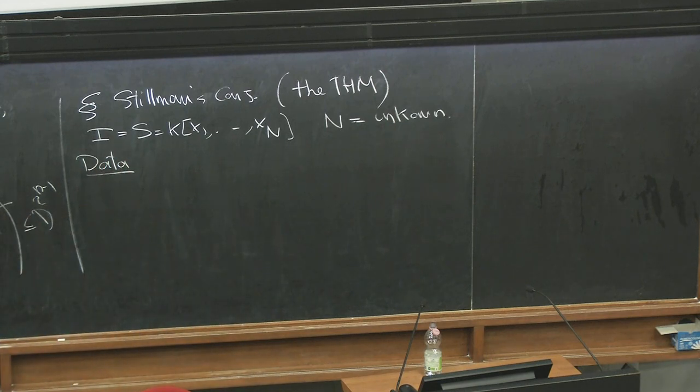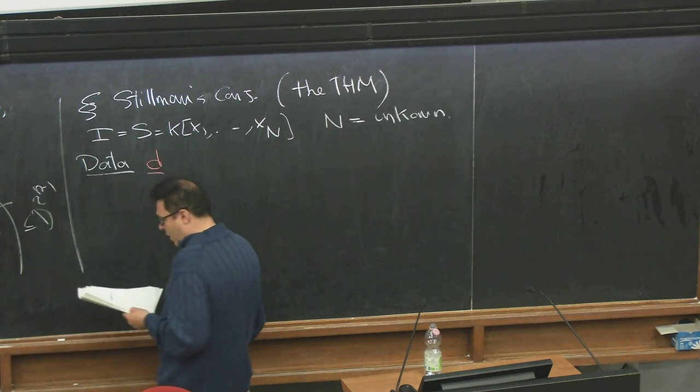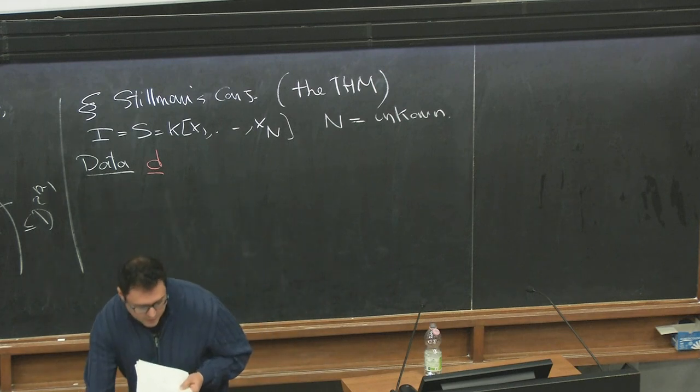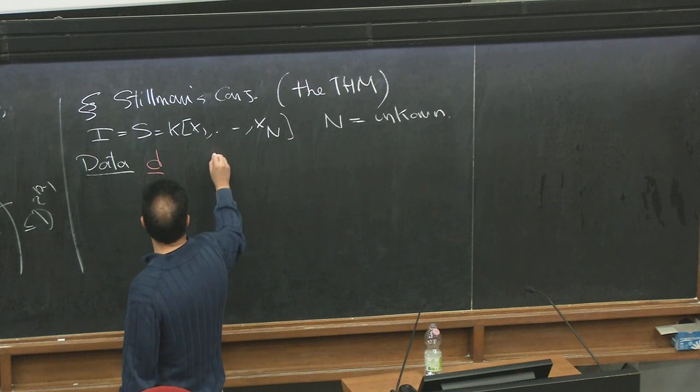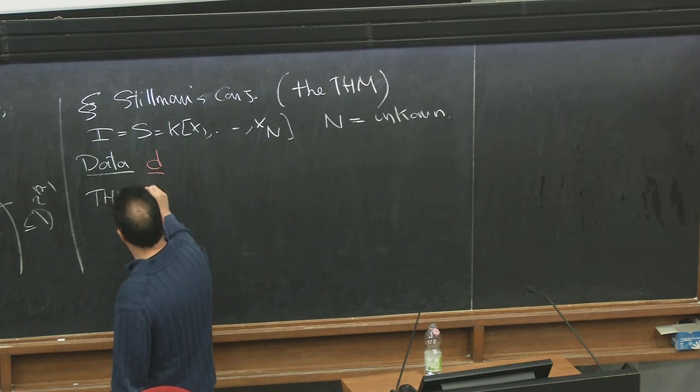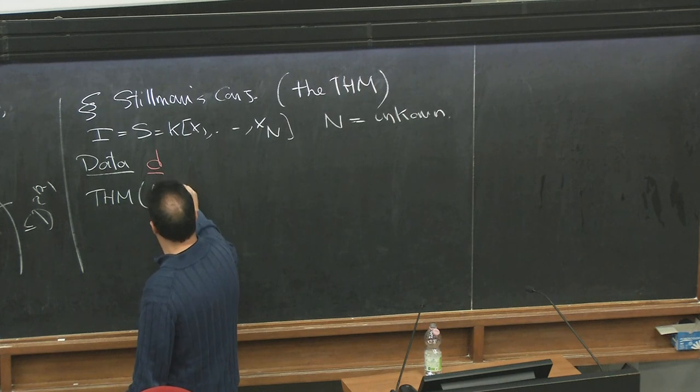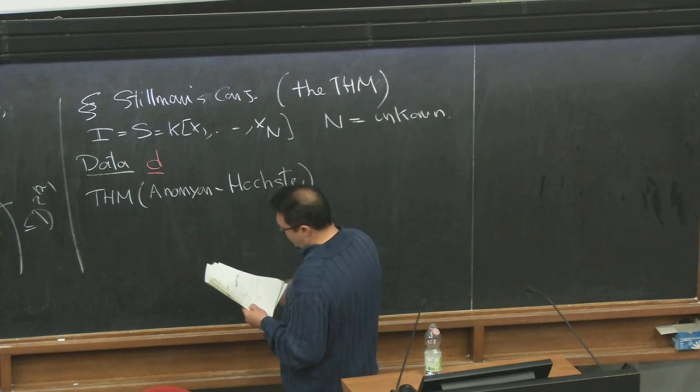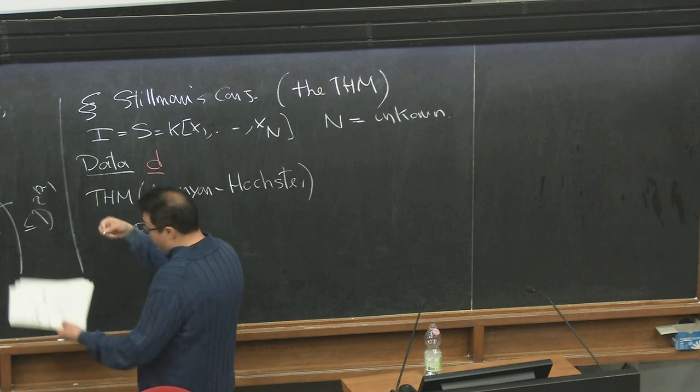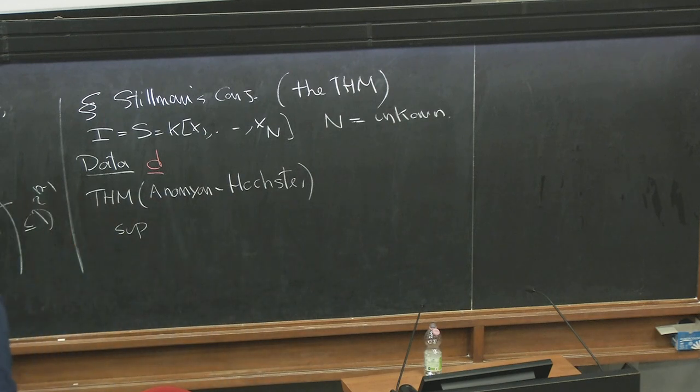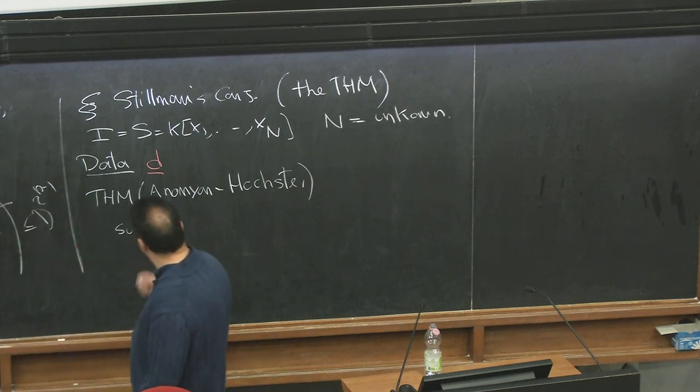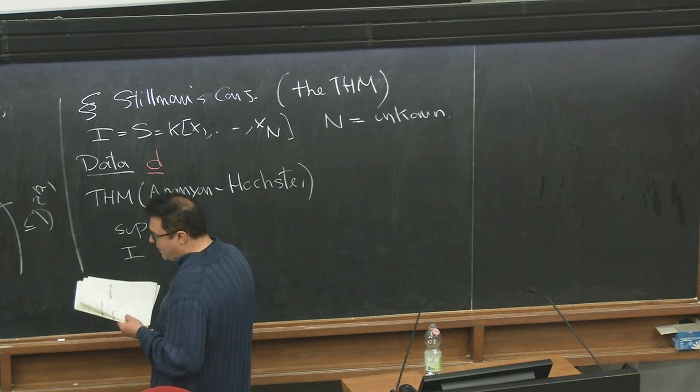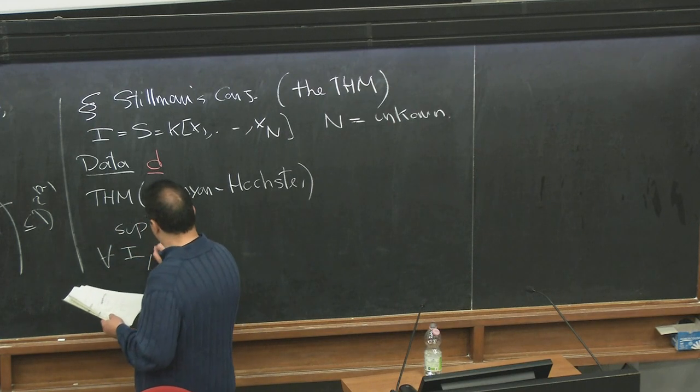So Stillman's conjecture type of problem. What I set up here: still I in a polynomial ring, now I have X1 to X big N. Let's say number of variables began unknown. So the data here is just the degree D.